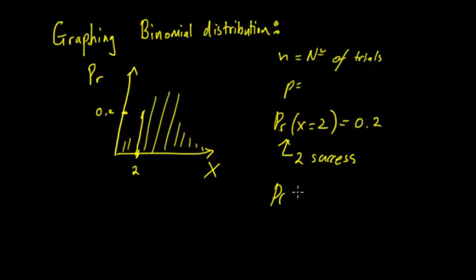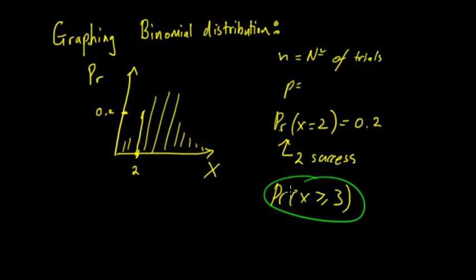If you were calculating the probability of x being greater than 3, you would need to add up the value at 3 plus all the other ones — so you need to get all those probability values and add them all up.